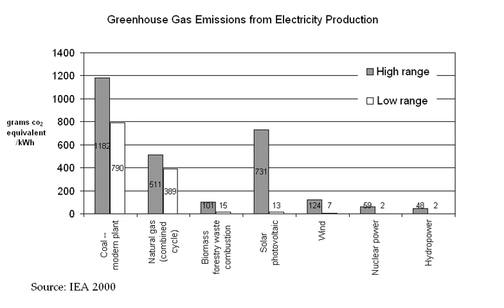Renewable heat sources such as shallow geothermal and passive solar energy reduce the amount of greenhouse gases emitted. It is possible to design buildings that are more energy efficient to cool by using lighter colored, more reflective materials in the development of urban areas — for example, by painting roofs white and planting trees. This saves energy because it cools buildings and reduces the urban heat island effect, thus reducing the use of air conditioning.